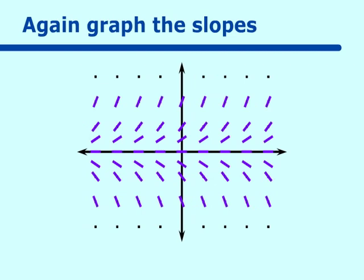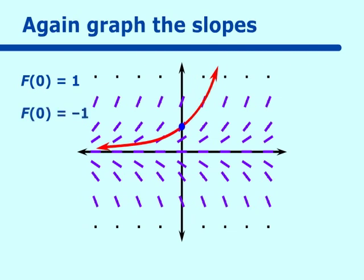Let's say I did f(0) equals 1 for a particular solution. That would be starting here and going up in that direction to the right. But when we come down, we will be heading towards the x-axis, and it will be an asymptote. If we did f(0) equals negative 1, then we would start at negative 1, go right — that one would go down — and towards the left, it would head towards the x-axis. A very different solution from the one before.